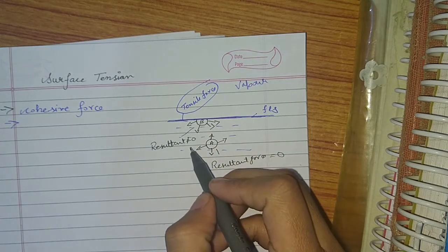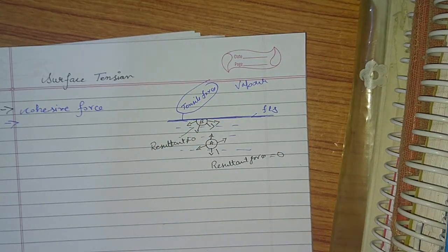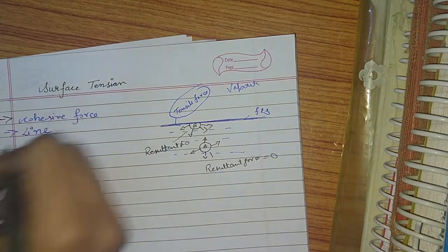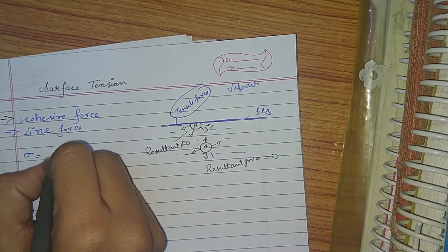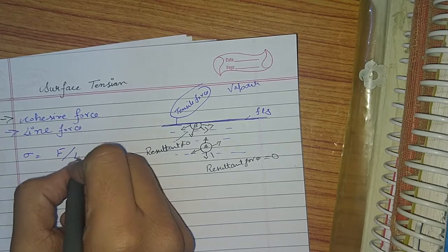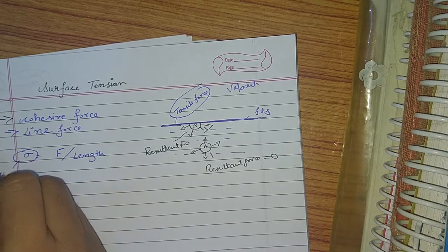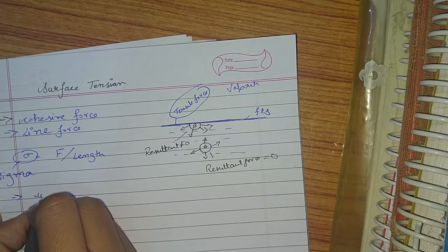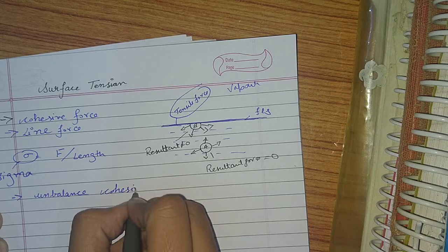Due to this net cohesive force, there will be a tensile force. This tensile force is our surface tension. It is a line force. Its value is equal to force per unit length. It is denoted by sigma. It is an unbalanced cohesive force.